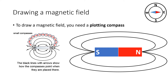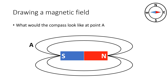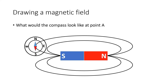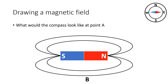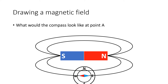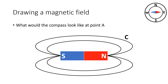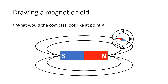You should be aware of how to draw a magnetic field, and to do this we normally use what's called a plotting compass. When we place the plotting compass at point A, the needle would run north-south because it lines up with the magnetic field line. If we put the plotting compass at point B, again the plotting compass needle lines up with the magnetic field line.